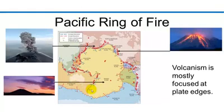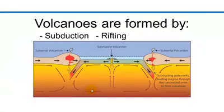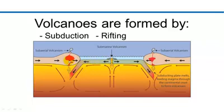But why are volcanoes located at the edges of the plate boundaries? Because that's where the action is – subducting, rifting, all kinds of tension is built up at our plate boundaries. Volcanoes can be formed in three ways. The first way is through subduction. The subducting plate, in this case an oceanic plate, dehydrates and forms magma that will rise through the crust to be erupted at the surface.